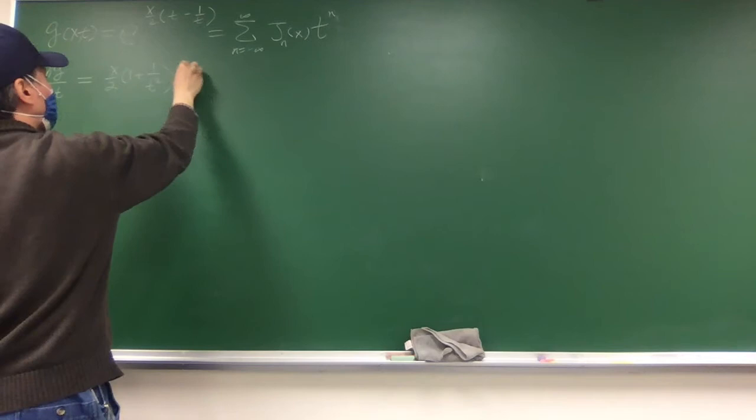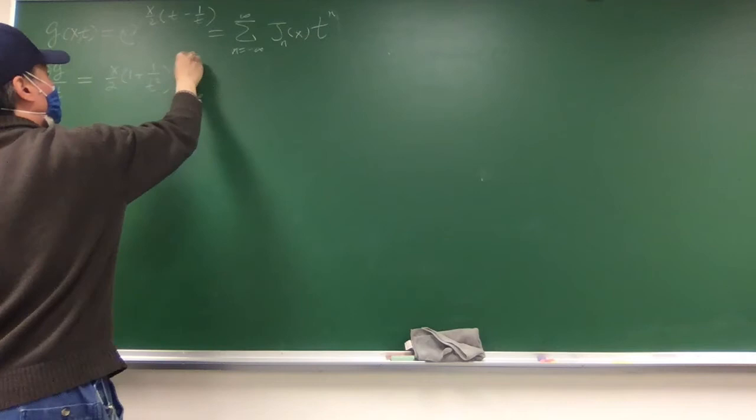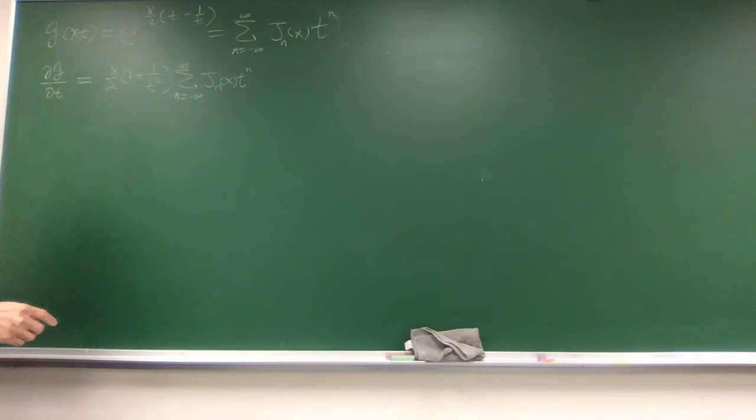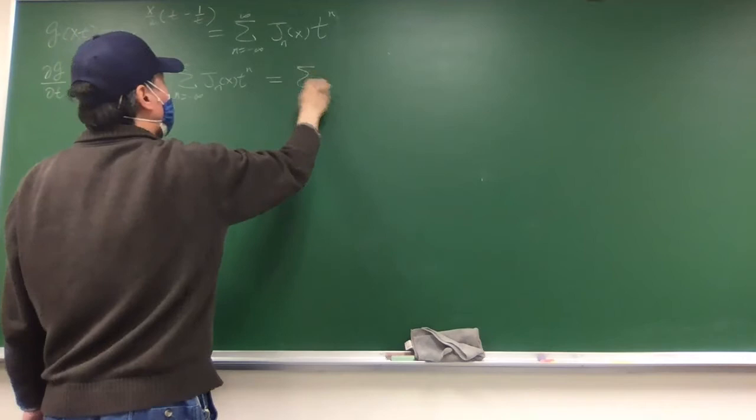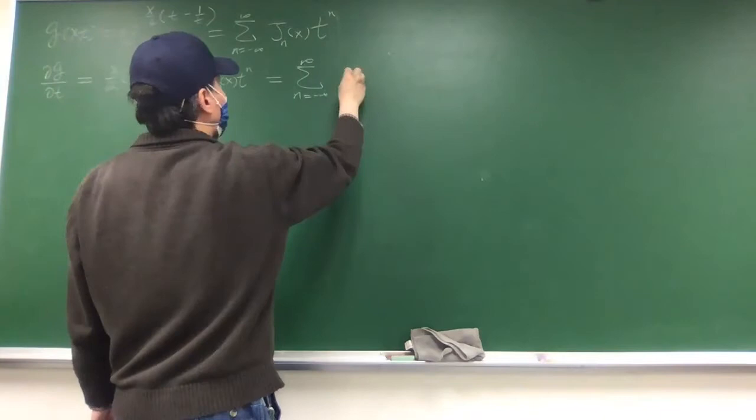The result is just the same exponential function. This is the derivative of the left-hand side copied from here. For the right-hand side, you take the derivative with respect to t, and what you get is n times the series.